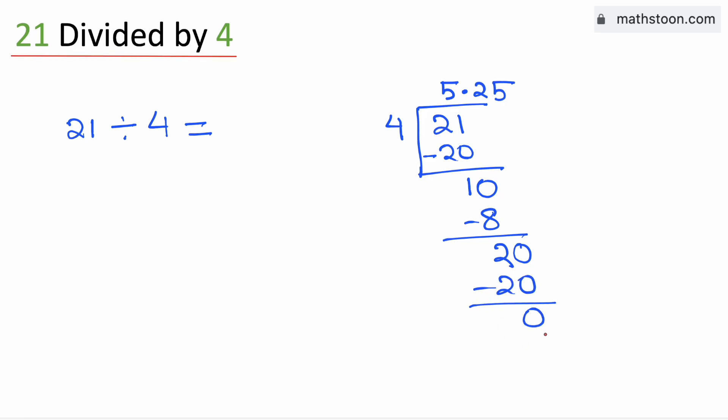As we have obtained the number 0, so we will stop. Therefore 21 divided by 4 is equal to 5.25 and this is our final answer.